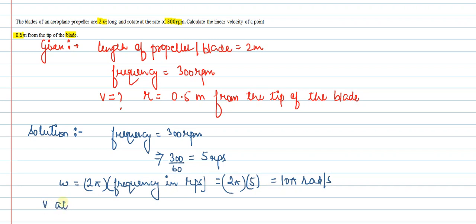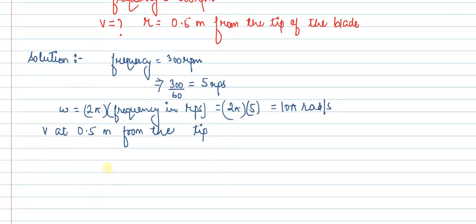Now we need to find v at 0.5 meter from the tip of the blade. Let us understand this. If this is the blade with a starting point and an end point, the question is saying 0.5 meter from the end. So from the starting point this will be 1.5 meters, because the total length given is 2 meters in the question.